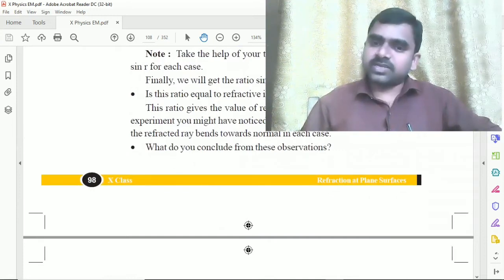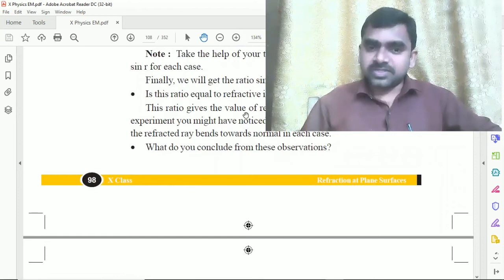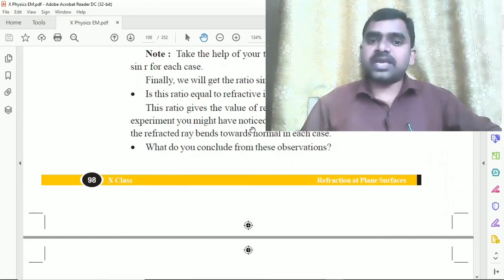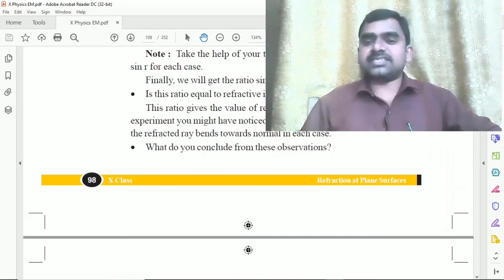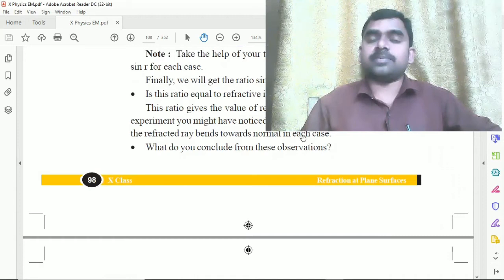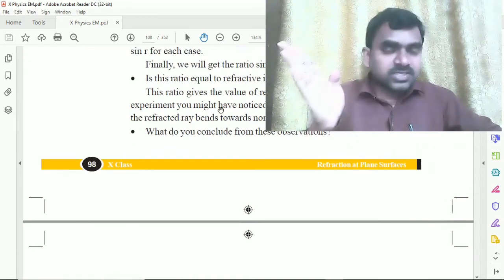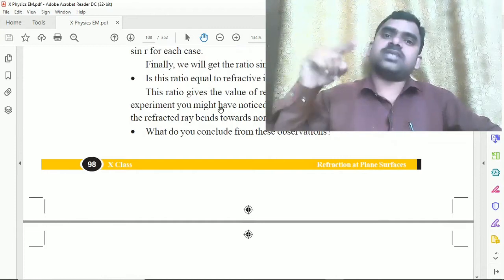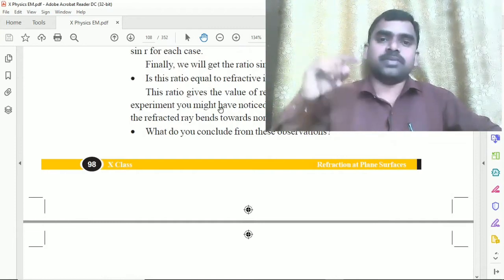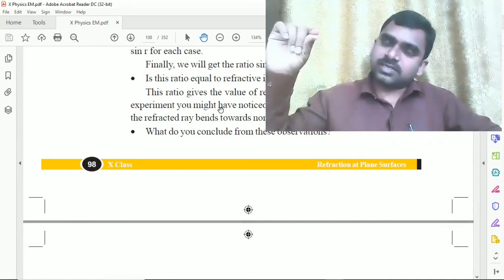Is this ratio equal to the refractive index of glass? Yes. Why? This ratio gives the value of refractive index of glass. In the above experiment, you might have noticed that r is less than i in all cases, and the refracted ray bends toward normal in each case. For example, angle of incidence is 15 degrees, refraction is less.